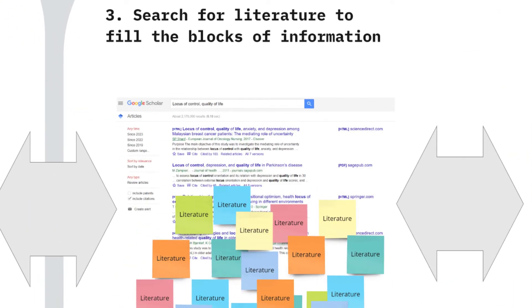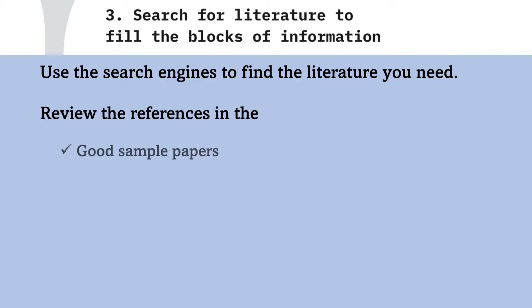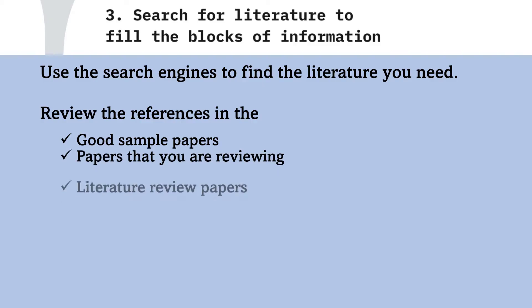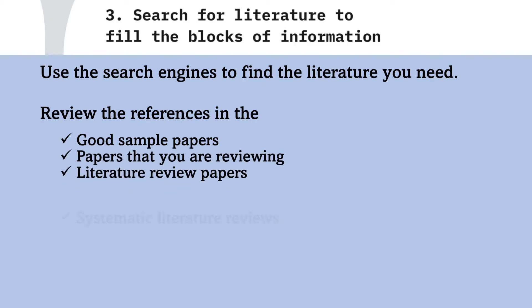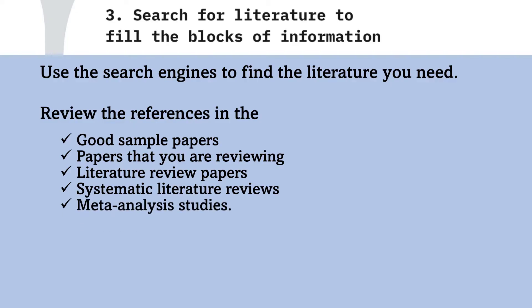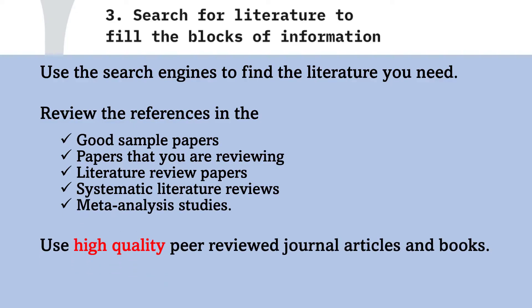Step 3 — search for literature to fill the blocks of information. As you have the structure of your literature review, you know exactly what materials you need to fill the blocks. Use search engines to find the literature you need. In the process of searching for research materials, you may review the references in good sample papers you already identified, as well as papers you are reviewing, references in literature review papers, systematic literature reviews, and meta-analysis studies. Ensure you use high-quality peer-reviewed journal articles and books. What to read and take from each paper depends on what you need for the blocks of your literature review.